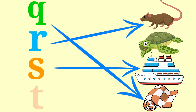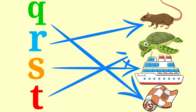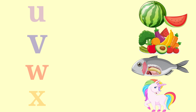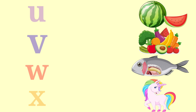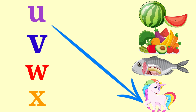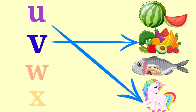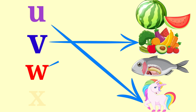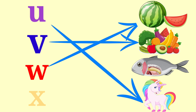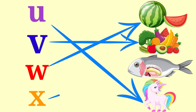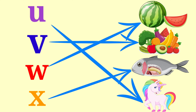T for turtle, U for unicorn, V for vegetables, W for watermelon, X for x-ray fish.